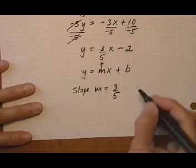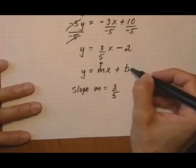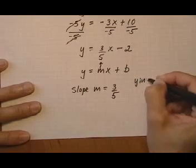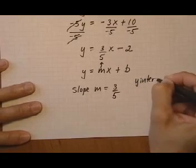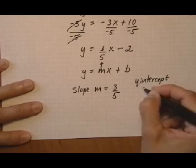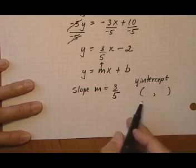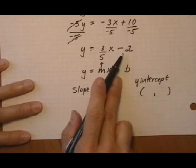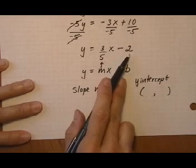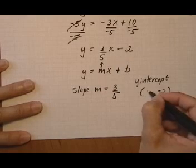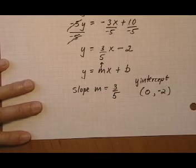If we were asked to find the y-intercept, the y value of the y-intercept would be negative 2. And at the y-intercept, x is always 0.